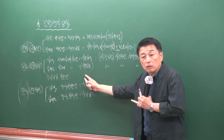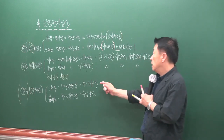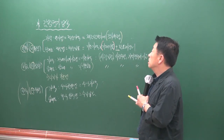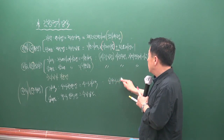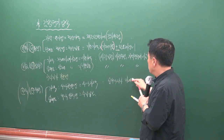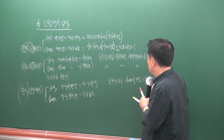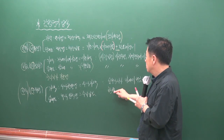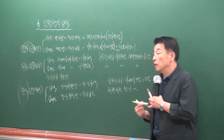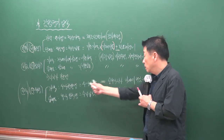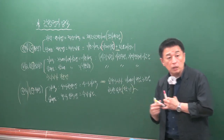임대사례비교법은 임료를 구하는 방법입니다. 수익환원법은 장래 발생할 순수익이나 미래의 현금 흐름을 환원 또는 할인하여 대상 물건의 가액을 구하는 방법입니다.